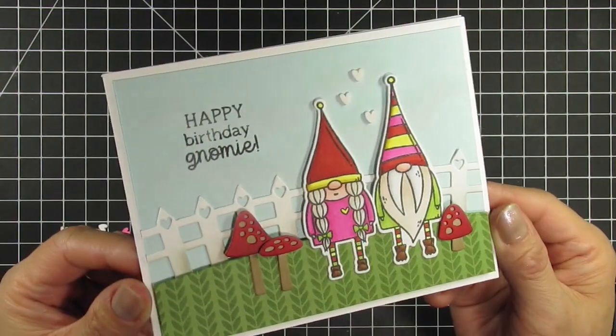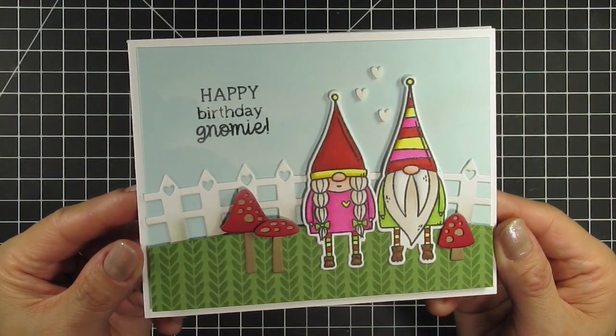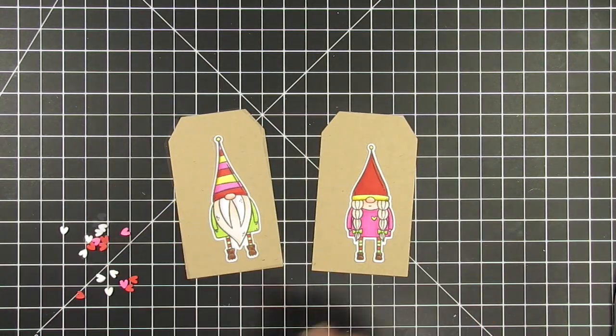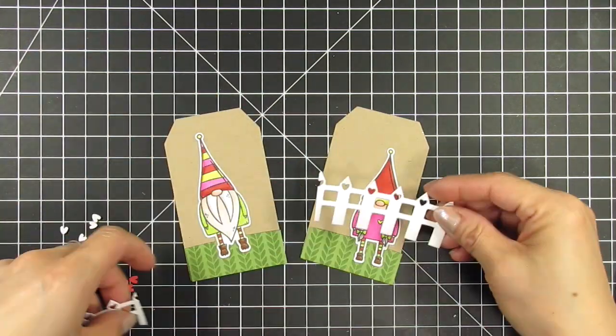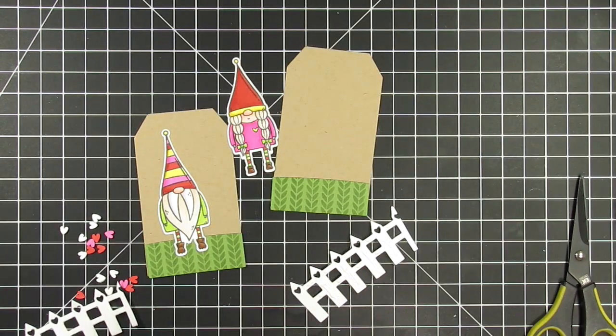Now I'm going to use the remaining pieces to create two gift tags. I cut these tags from toffee cardstock using the third largest of the tag stacklets two dies. I use the same dies for the heart fence and hill, plus the extra piece of peapod cable knit background to create the same backgrounds for these tags.